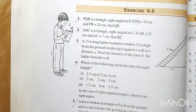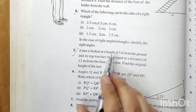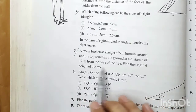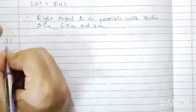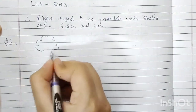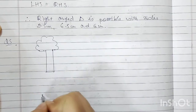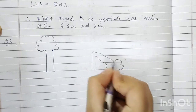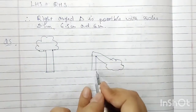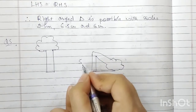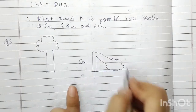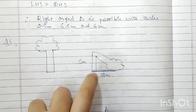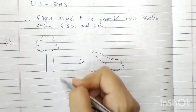Hello students, today we are going to continue with exercise 6.5, question number 5. A tree is broken at a height of 5 meters from the ground and its top touches the ground at a distance of 12 meters from the base of the tree. Find the original height of the tree. A storm came and the tree broke in the middle.